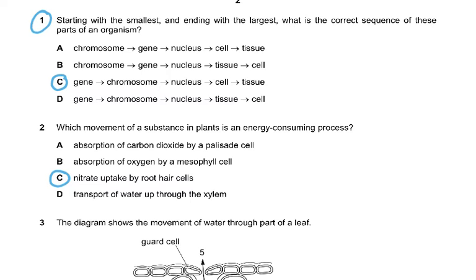Question 1: starting with the smallest and ending with the largest, what is the correct sequence of these parts of an organism? Gene, chromosome, nucleus, cell, tissue.